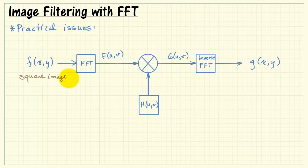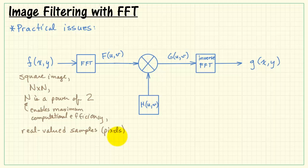To begin with, we need the image to look like a square image of n by n pixels. We also need n to be a power of 2. Doing so enables maximum computational efficiency for the fast Fourier transform. We also need an image that has real valued samples.